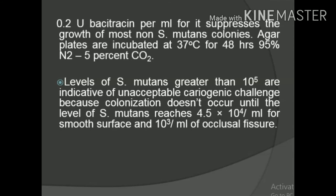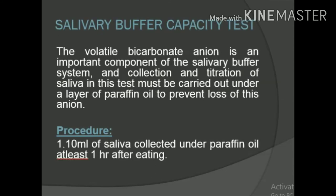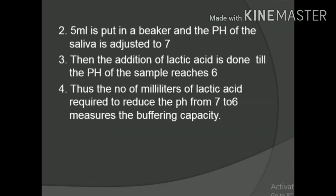The salivary buffer capacity test: the volatile bicarbonate anion is an important component of the salivary buffer system, and collection and titration of saliva must be carried out under a layer of paraffin oil to prevent loss of this anion. Ten ml of saliva is collected under paraffin oil at least one hour after eating; 5 ml is placed in a beaker and the pH is adjusted to 7. Lactic acid is then added until pH reaches 6. The number of milliliters of lactic acid required to reduce pH from 7 to 6 measures the buffering capacity.